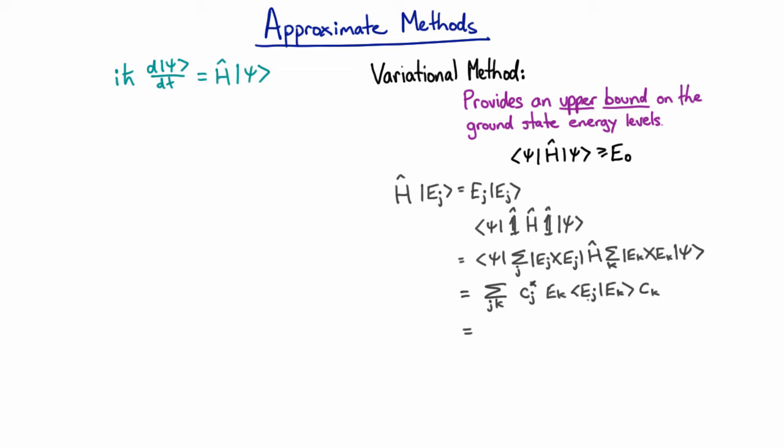Now the inner product between two orthonormal states is the delta function, which means we can get rid of one of these sums. And so it's just the weighted sum of the energies as we'd expect, weighted by the probability of having that energy in that state.